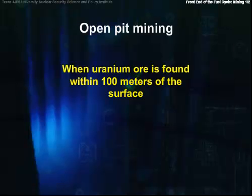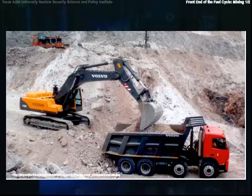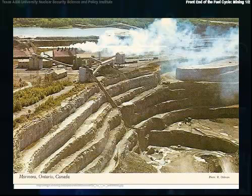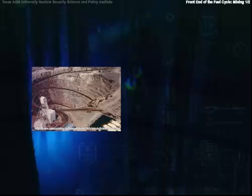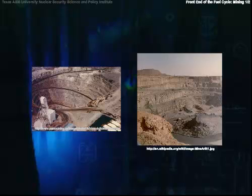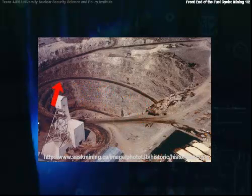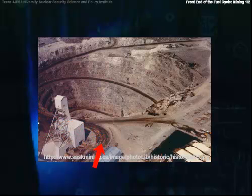When uranium ore is found within 100 meters of the surface, open-pit mining is usually used. Open-pit mining begins by removing the overburden and waste rock on top of the ore body to expose the hard rock. Then a pit is excavated to expose the ore. The walls of the pit are mined in a series of benches or steps to prevent collapse. To mine each bench, holes are drilled in the rock and loaded with explosives, which are detonated to break up the rock. The resulting broken rock is then hauled to the surface in large trucks that carry up to 200 tons of material at a time.